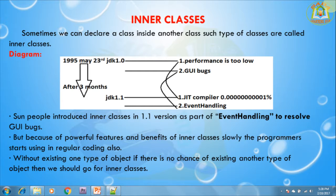Because of the powerful features and benefits of inner classes, programmers slowly started using them in regular coding as well. Without an existing university object, there is no chance of an existing department object, hence we have to define the department class inside the university class.